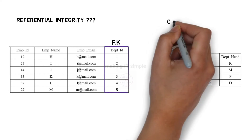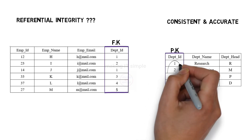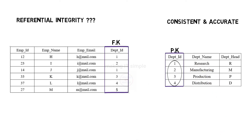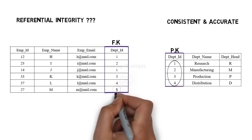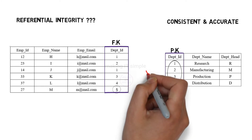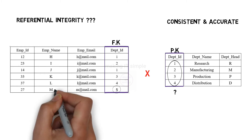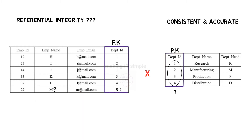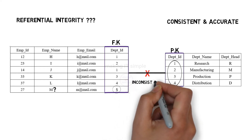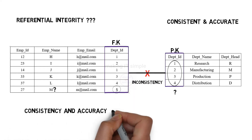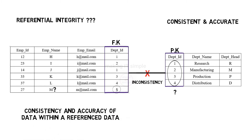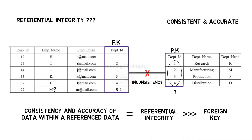Foreign key attributes reference the primary key of another table, so the data in both these columns must be consistent and accurate. For example, if department IDs are 1, 2, 3, and 4 in the department table, but in the foreign key column there is a record with department ID 5, there is no consistency in the database — there is no record for department ID 5, so we cannot tell which department that employee is working in. This consistency and accuracy of data within reference data is called referential integrity, and it is maintained by using a foreign key attribute.